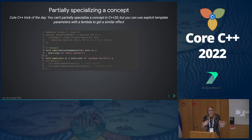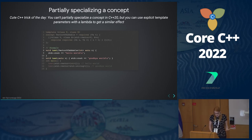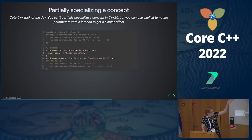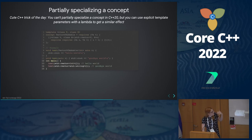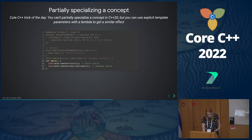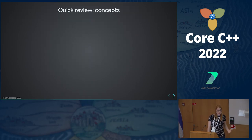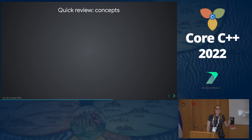How many people have written a concept in a real piece of code? More than I thought — that is awesome! How many people have written a concept in a fake piece of code? All the committee members. How many people have written a constraint using enable_if or something before C++20? A fair number of you — and the rest of you write way better code than the people who raised their hands probably.